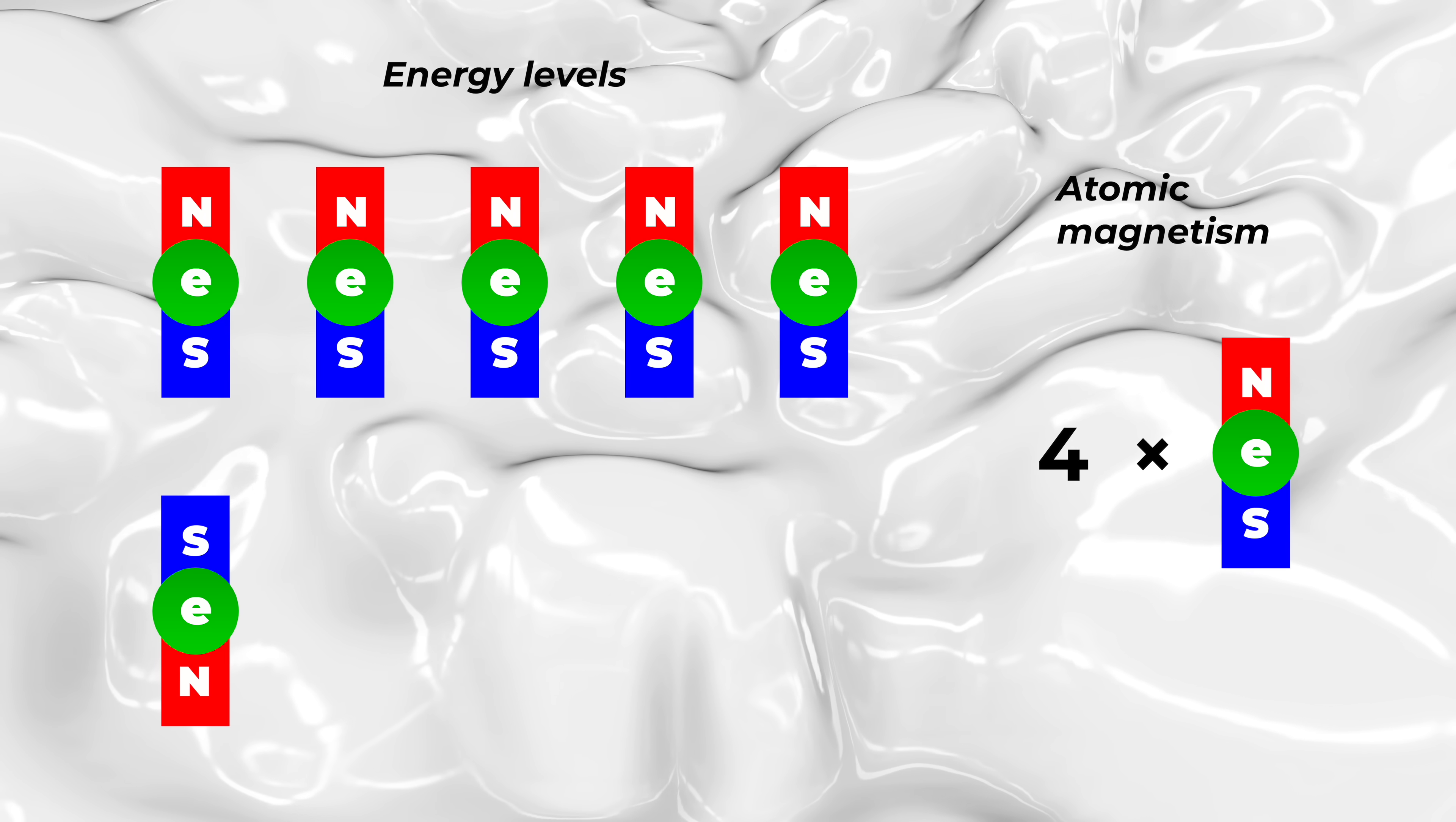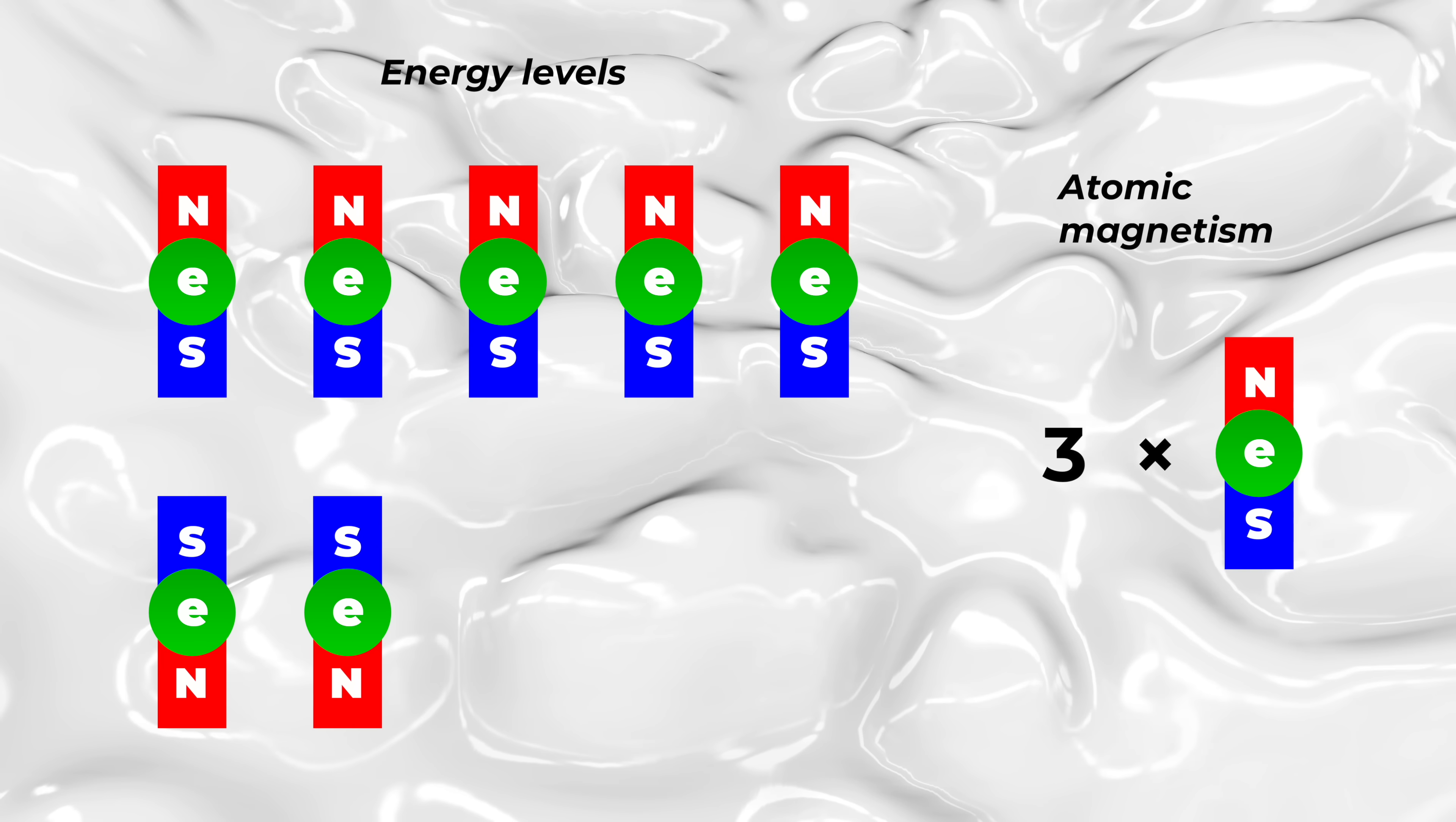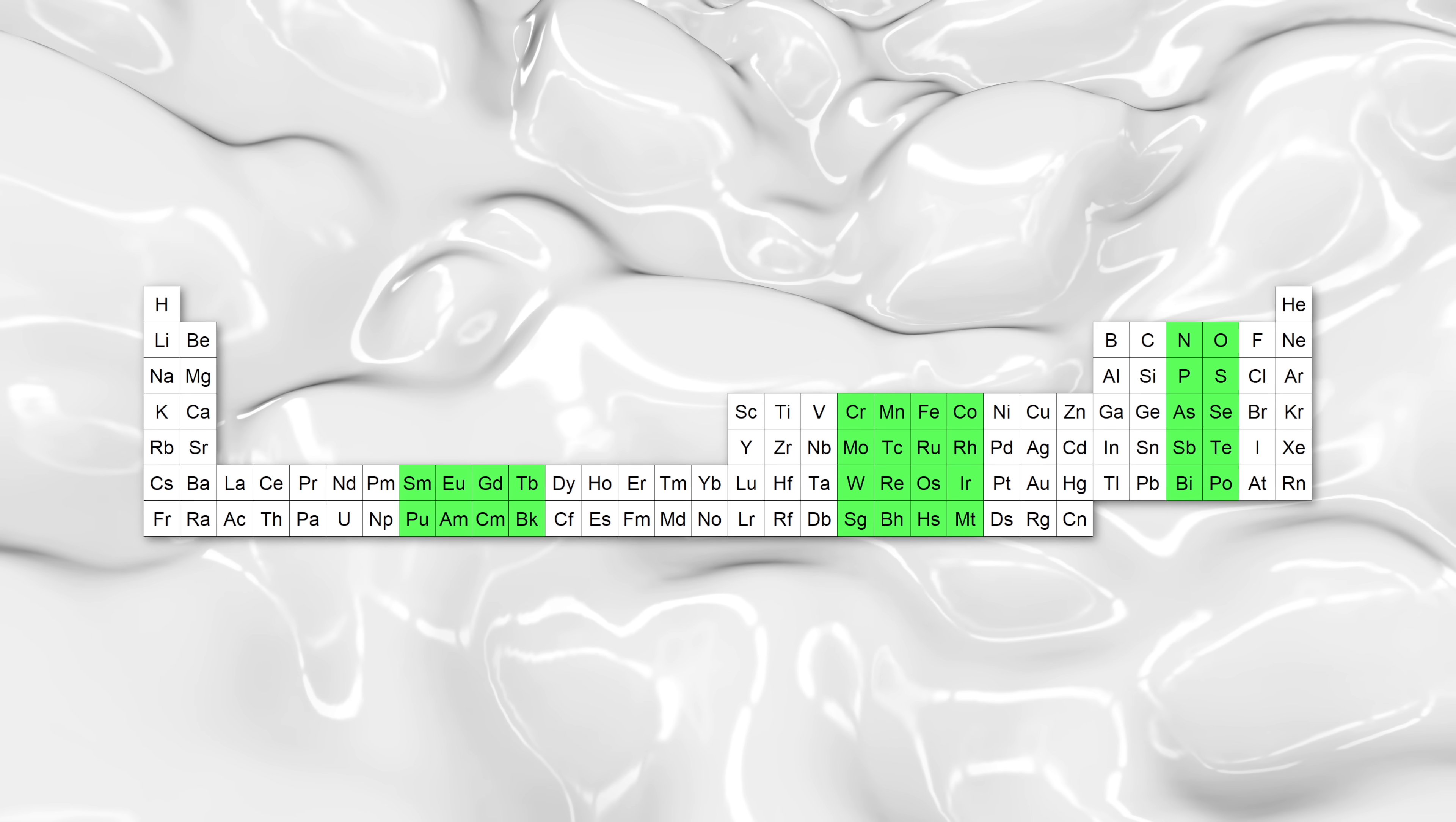But add a sixth electron, and that's past the halfway point. So that electron has to enter as a magnet oriented opposite the others. So this atom will only have the magnetic properties of four electrons. Seven electrons means the atom has the magnetism of three electrons. Eight means two, nine means one, and ten means zero. So this is a crucial point. Atoms with near-empty or near-full energy levels aren't good magnets. The good magnets are the ones with half of the orbital fields.